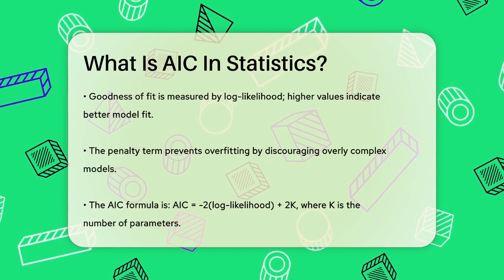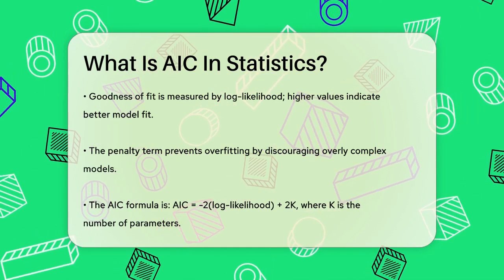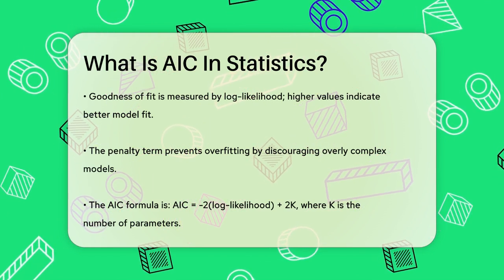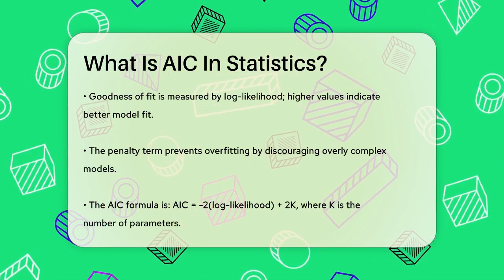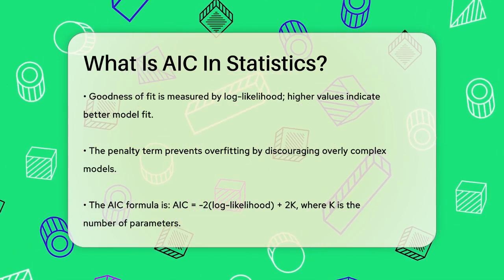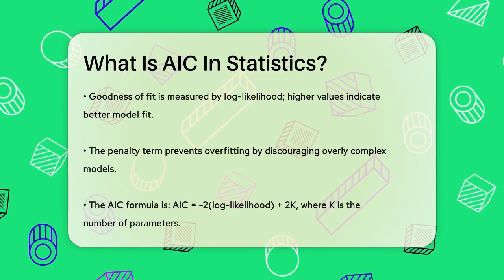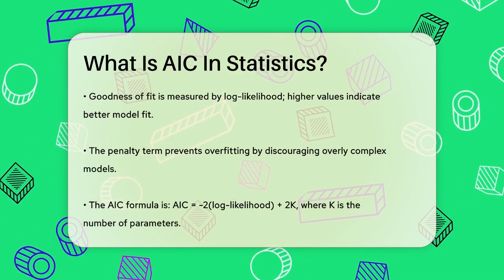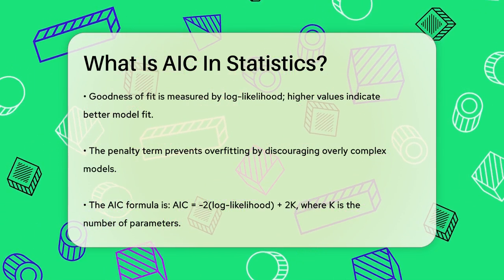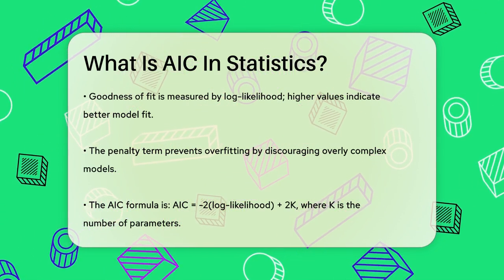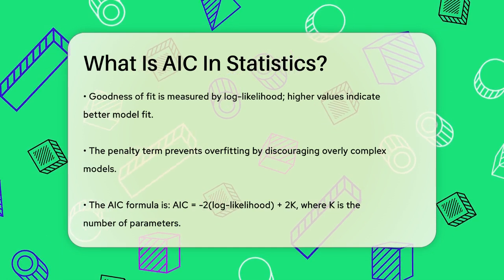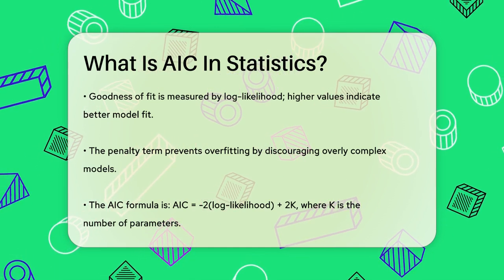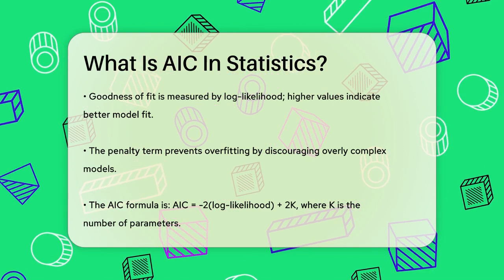The formula for AIC is simple: AIC equals 2 times negative log likelihood plus 2k, where k is the number of model parameters, including the intercept and any other variables. For smaller sample sizes, you might use a slightly different formula called AICc, which adds an extra penalty term to account for the sample size.